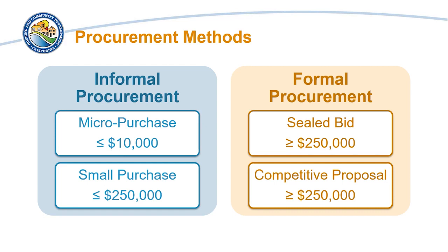Micropurchases can only be used for the procurement of items that do not exceed $10,000 in the aggregate. Small purchases can only be used for the procurement of goods and services that do not exceed $250,000 in the aggregate. Sealed bids and competitive proposals must be used for the procurement of goods and services that exceed $250,000 in the aggregate.